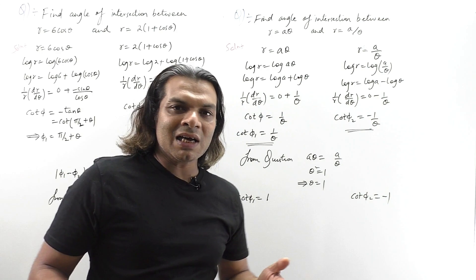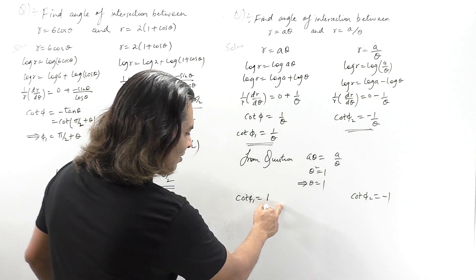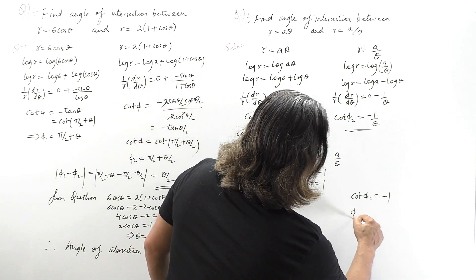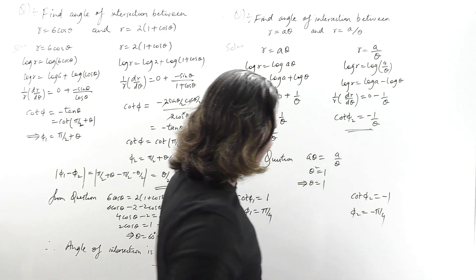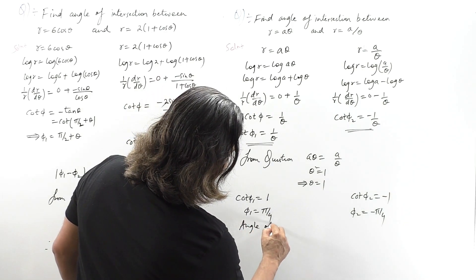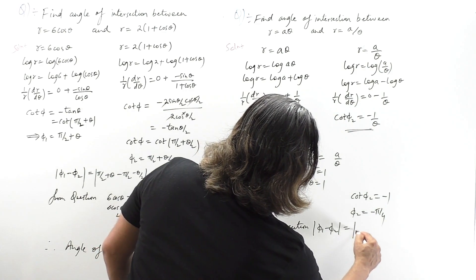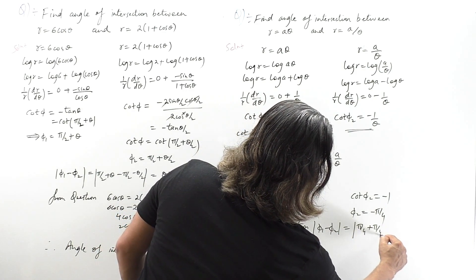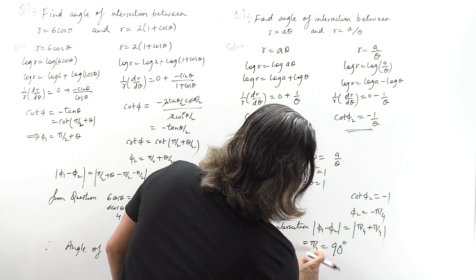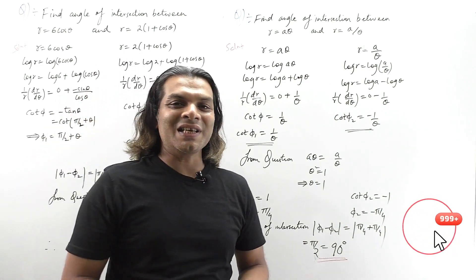We can directly find the angles. Since cot φ₁ = 1, φ₁ = cot⁻¹(1) = π/4 = 45°. And since cot φ₂ = -1, φ₂ = -π/4. Therefore the angle of intersection is φ₁ - φ₂ = π/4 - (-π/4) = 2π/4 = π/2, which is 90 degrees. This means the curves intersect each other orthogonally.